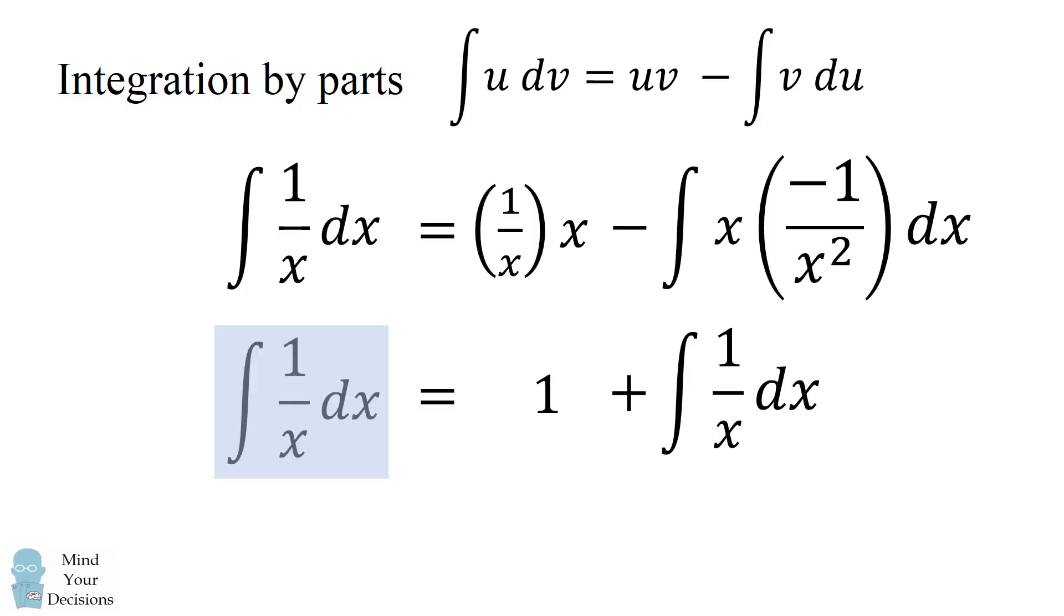We now have the integral of 1 over x dx on both sides, so we cancel it out. We end up that the left hand side will be equal to 0 and the right hand side will be equal to 1. So we proved that 0 is equal to 1.